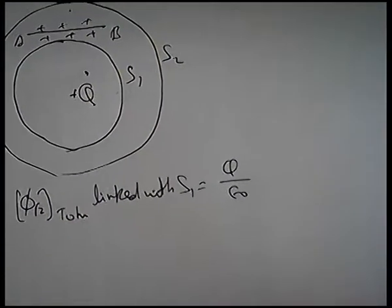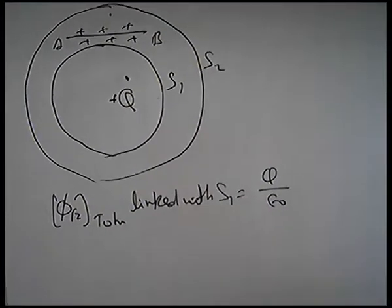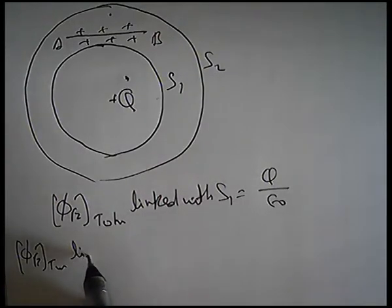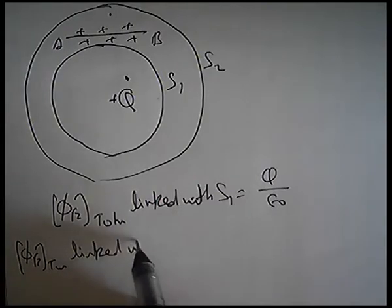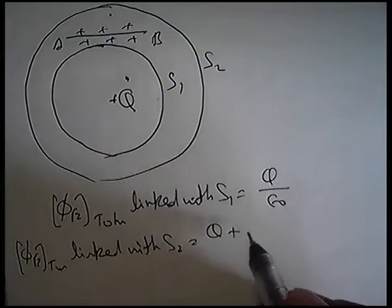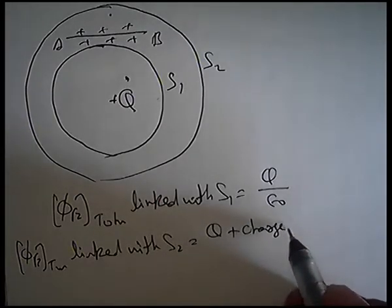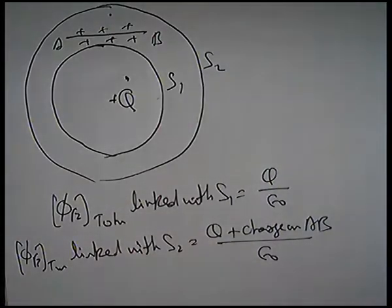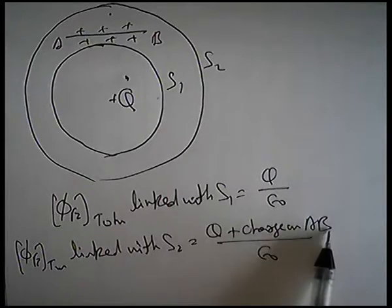लेकिन S2 से निकालने के लिए — phi E total linked with S2 यह आपका होगा Q plus charge on AB divided by epsilon 0. तो इस पूरे question में केवल charge on AB find करना है.